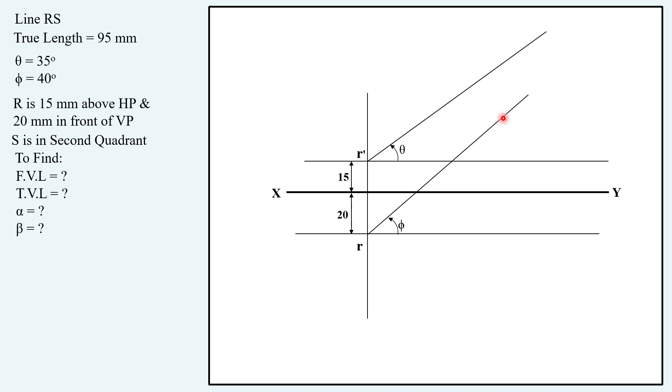You have 95 mm as true length, taking 95 in your compass, keeping on R', drawing an arc. Similarly, keeping the compass on R, drawing another arc.